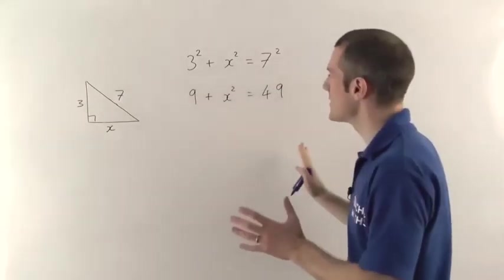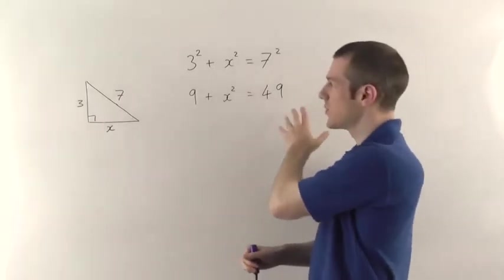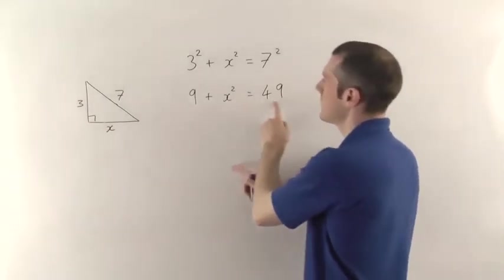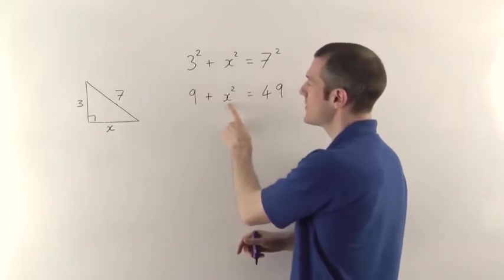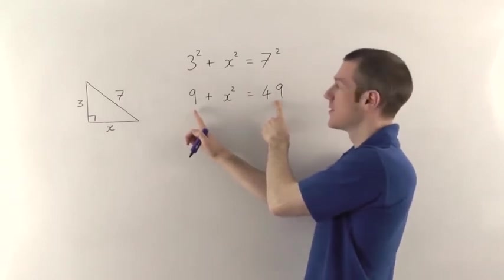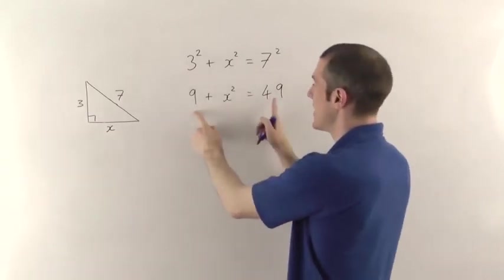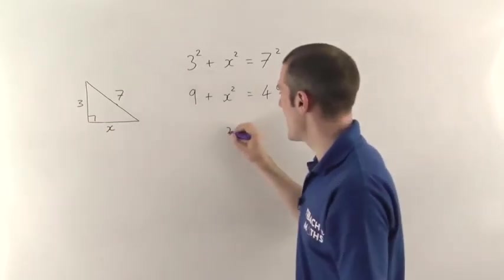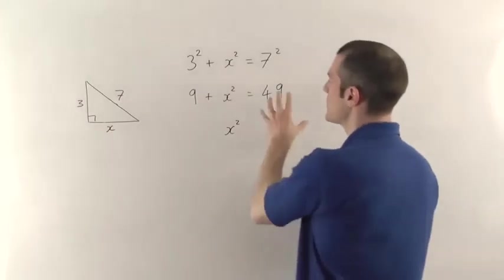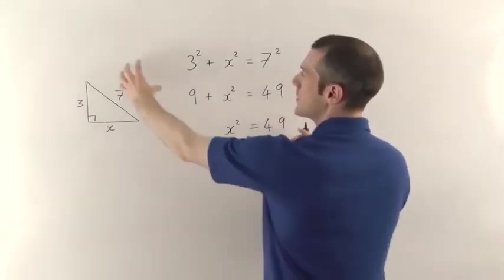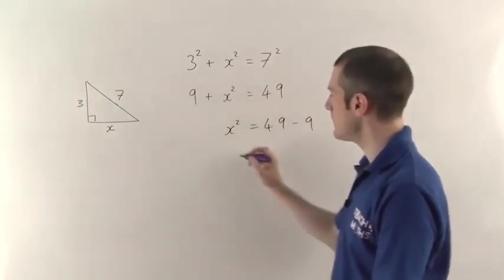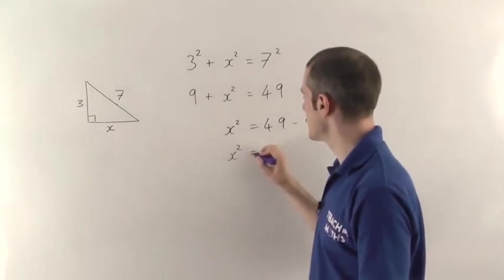Now if you're familiar with algebra, you can just move the 9 over, it becomes a minus 9, you work it out. If you're not, don't worry about it. Effectively, we're saying that when you add these two together, you get 49. So this one has got to be 49 minus the 9. It's got to be the difference, because the difference between them when you add it to 9 has got to add up to the 49. So x squared, the area of the square on this side that we still don't know yet, it's got to be the total area, the area of the big square, minus the one on this side. So it's going to be minus the 9.